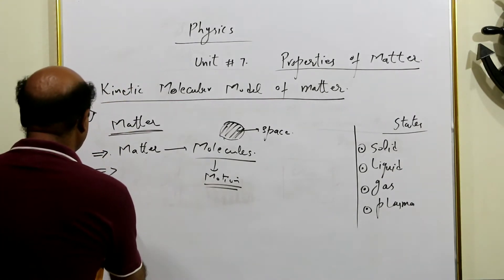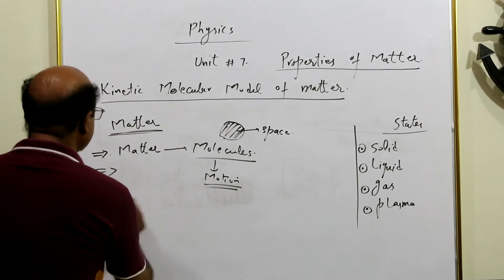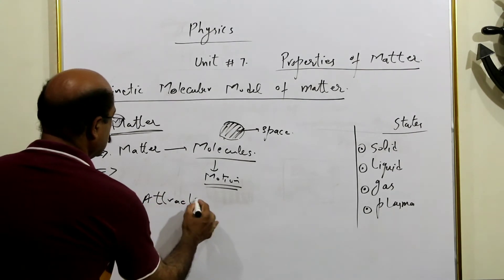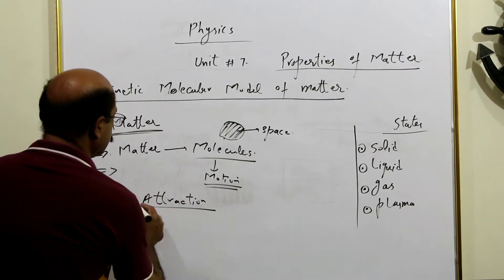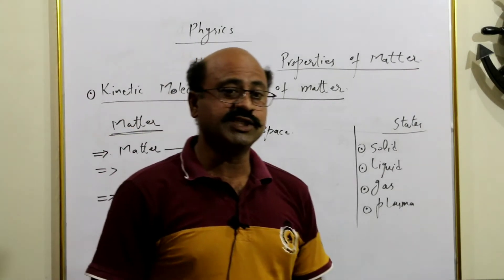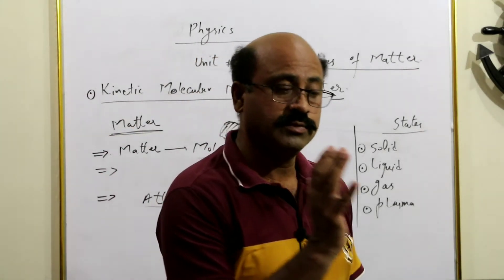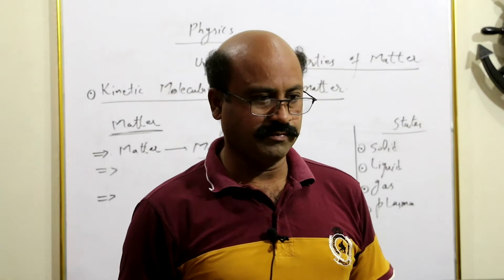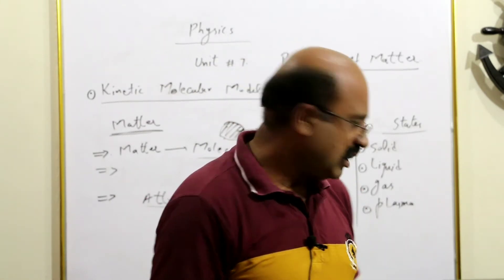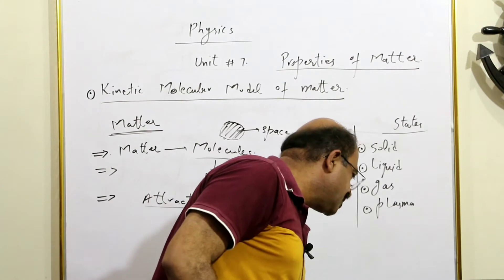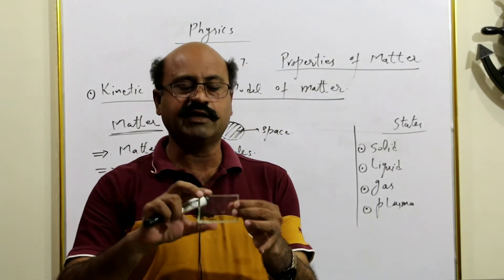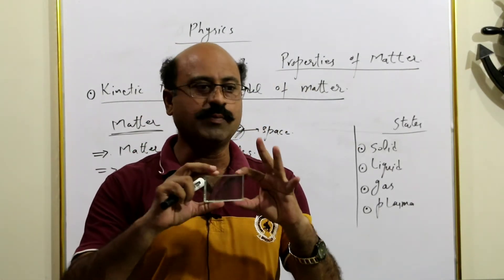The postulate is: the molecules attract each other. This attraction gives the shape to the state of matter. Any attraction — yani attraction kya karti hai — shape deti hai. Jis mein attraction zyada strong hai, us ki khaas shape hoti hai.